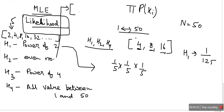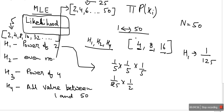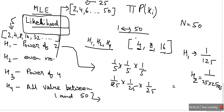Now let's take h2. The data points in h2 will be even numbers from 2 to 50, giving 25 total data points. The probability of each data point is 1/25. So the probability of 4 is 1/25, probability of 8 is 1/25, and probability of 16 is 1/25. This gives us the likelihood for h2.